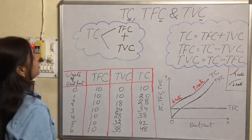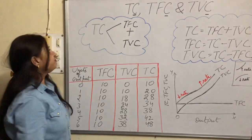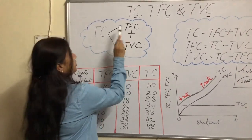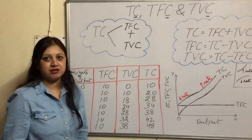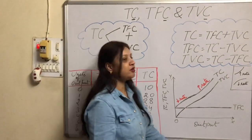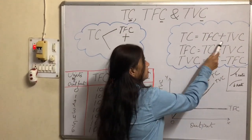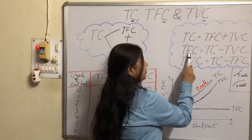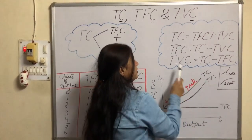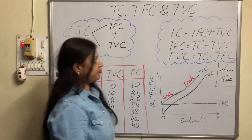So now how are these three terms related? TC is the summation of TFC and TVC. The formula is: TC equals TFC plus TVC; TFC equals TC minus TVC; TVC equals TC minus TFC.